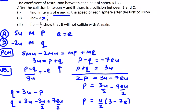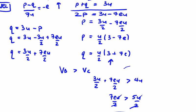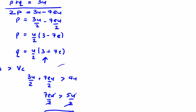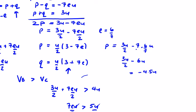Part (iii): If e is equal to 6 over 7, show that B will not collide with A again. If e equals 6 over 7, the velocity of p is 3u over 2 minus 7 times 6 over 7 times u, which is 3u over 2 minus 6u, equal to minus 1.5u. So that's the speed of p.